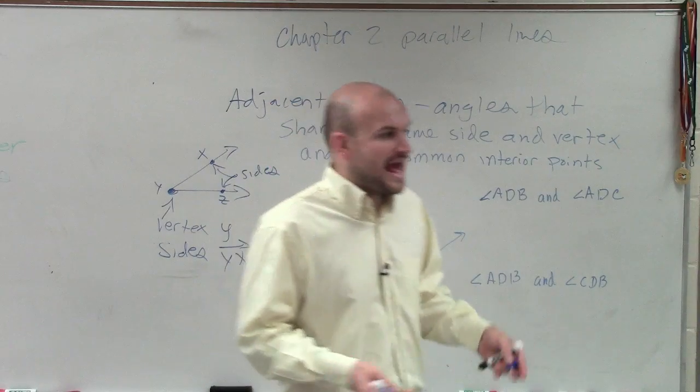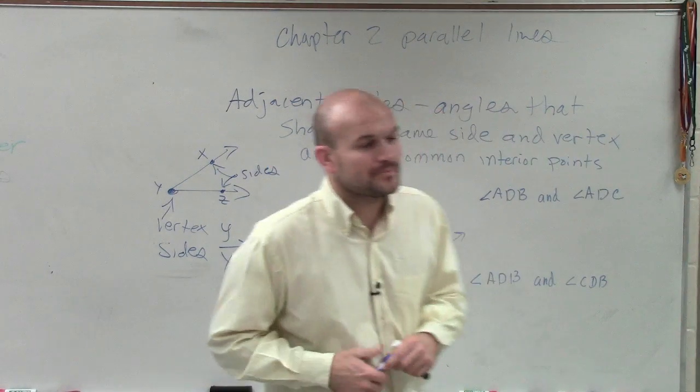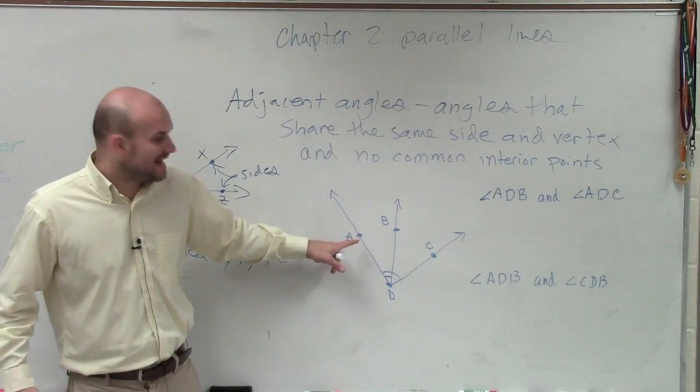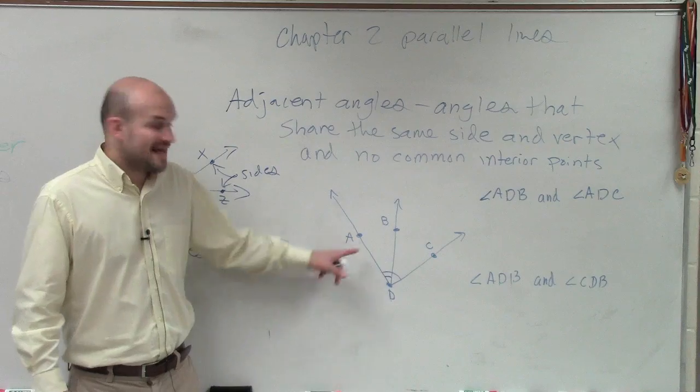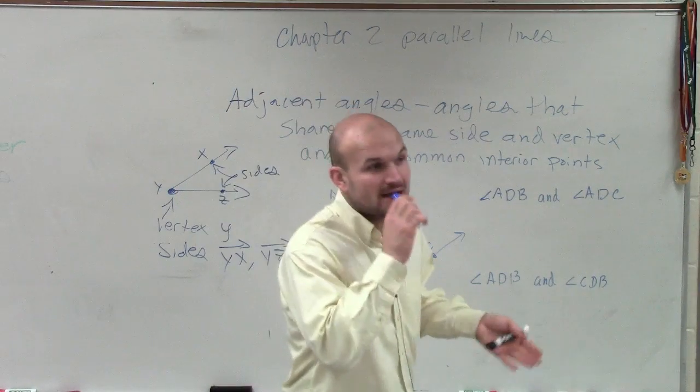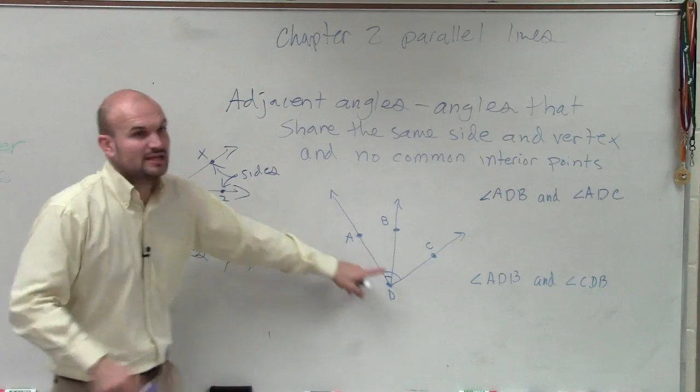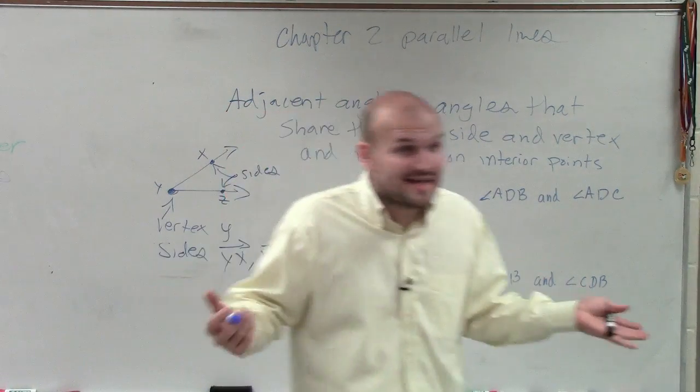Out of those two angles, what side do they share? Elena, do you know? What side does ADB and ADC share? Well, A is a point. So what side though? Remember, side is going to be a ray. DA, right? We want to make sure we label it from the vertex to the point. So yeah, they share a side.